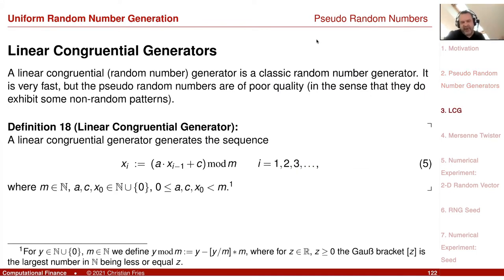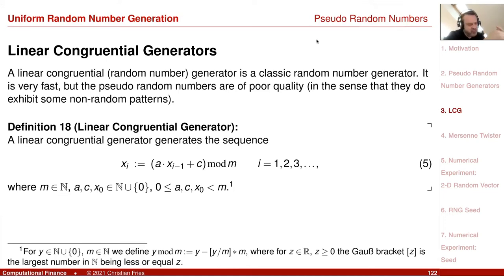A classic example of such an algorithm that generates a sequence of numbers that look random is the linear congruential generator. For very important applications, you should not use these generators because, while they look good, if you look a little bit closer, you see that the numbers are actually of poor quality. I have a result on the next slide that illustrates this, but at first look they look good.